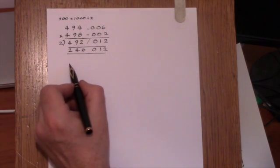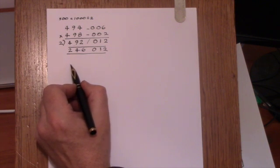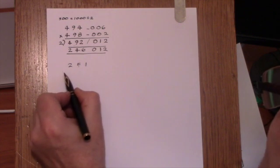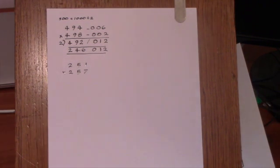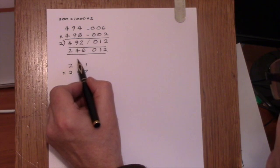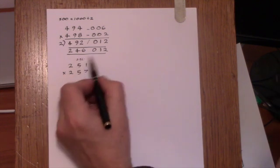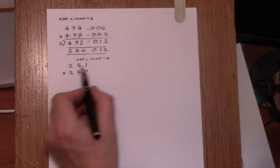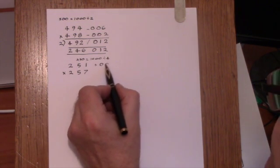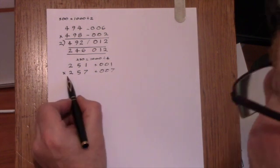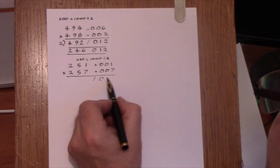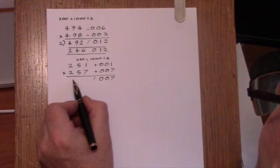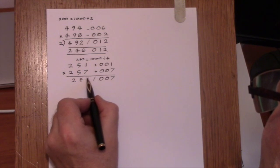The next example we'll look at 251 multiplied by 257. Here, I'll take the working base as 250. And 250 is a quarter of 1000, so it's 1000 divided by 4. Our surpluses are 001 and 007. And 1 times 7, of course, is 7. Then we cross-add on the left to give 258.